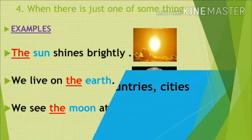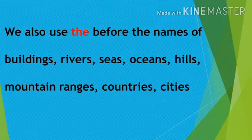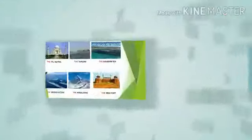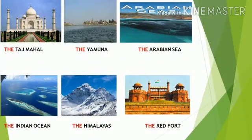We also use THE before the names of buildings, rivers, seas, oceans, hills, mountains, countries, and cities. For example: the Taj Mahal, the Yamuna, the Arabian Sea, the Indian Ocean, the Himalayas, the Red Fort, etc.